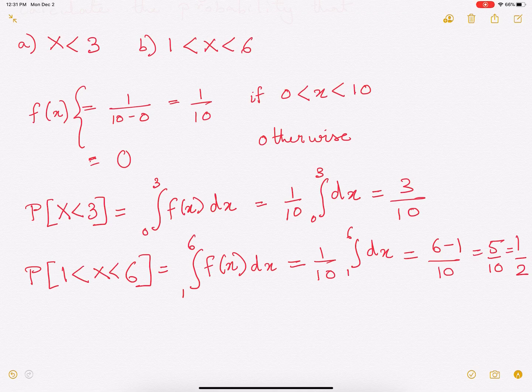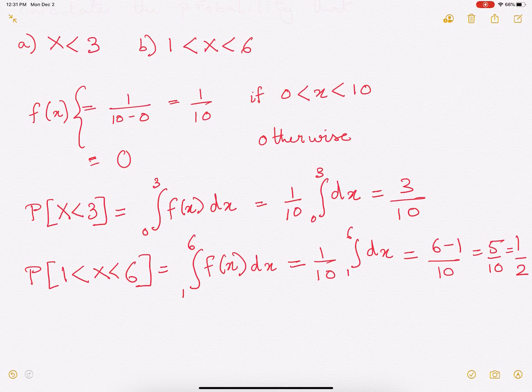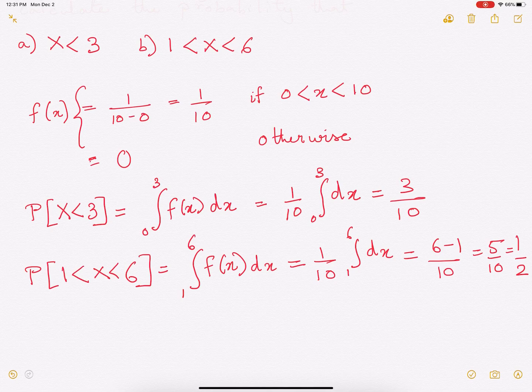So that is the probability of x lying between 1 and 6, provided that x is a uniformly distributed random variable. Thank you for watching. With this, I'll complete this video.